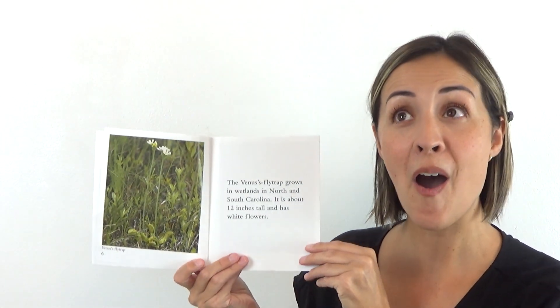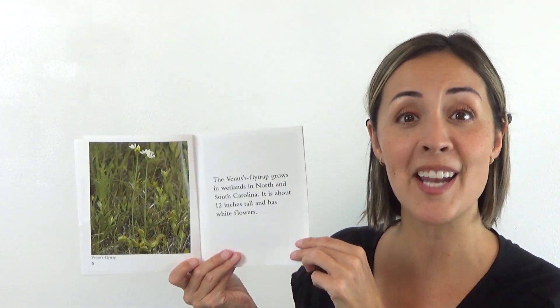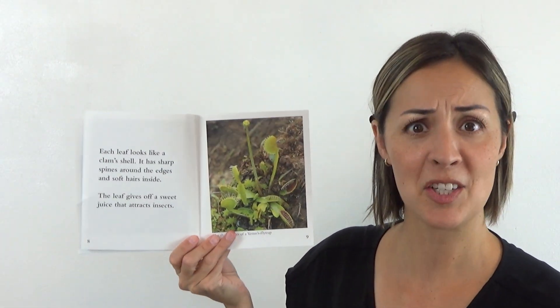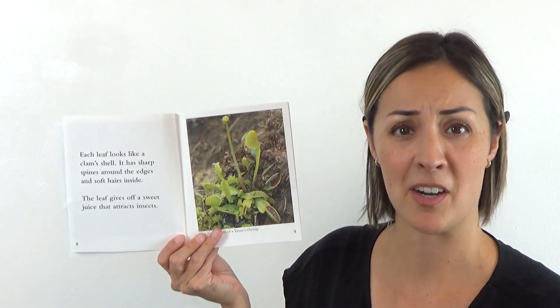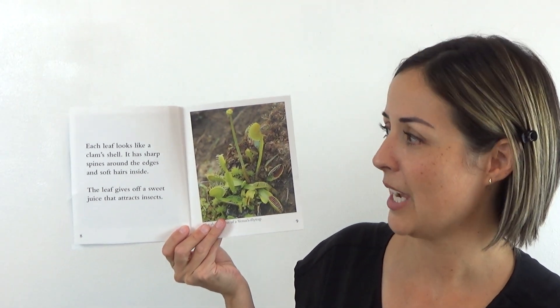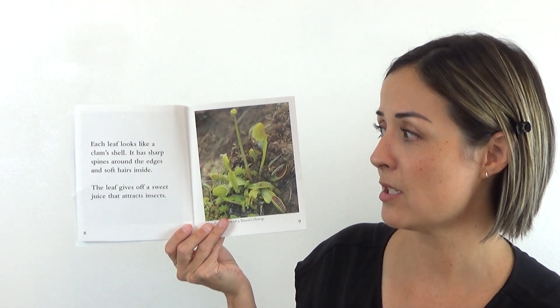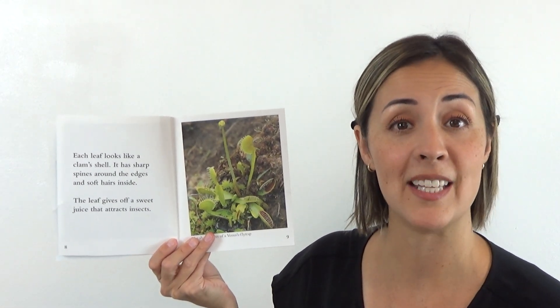Can you say that? Ready? Oh, it's a Venus flytrap. Yeah. Each leaf looks like a clam's shell. That clam part is actually the leaf. It has sharp spines around the edges and soft hairs inside.